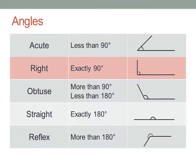A right angle is exactly a quarter turn, ninety degrees. We usually mark a right angle with a little square in the corner, instead of a curved arc.